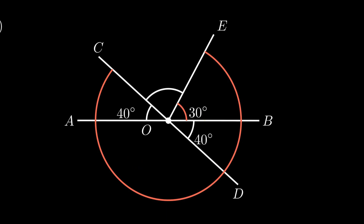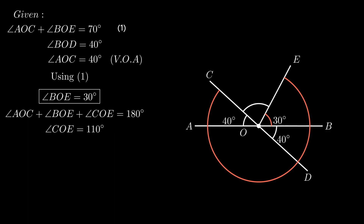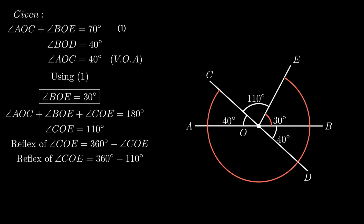To find the reflex of angle COE, we need to find angle COE. From the figure, the sum of angle AOC, angle COE, and angle BOE equals 180 degrees, as angles on the same straight line form 180 degrees. Using equation number 1, angle AOC plus angle BOE equals 70 degrees, therefore angle COE becomes 180 minus 70, which equals 110 degrees. As a complete angle measures 360 degrees, the reflex of angle COE equals 360 minus 110, which is 250 degrees.